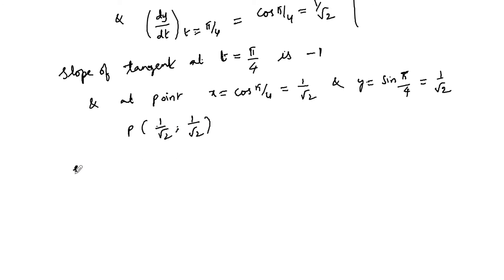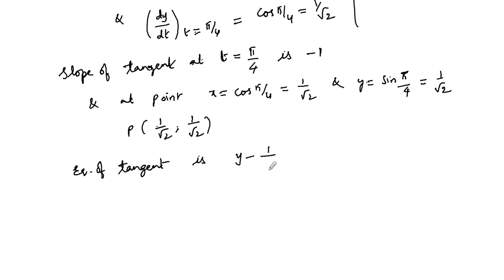Equation of the tangent is y minus y1 is equal to minus 1 times x minus 1 by root 2, using the formula y minus y1 is equal to m times of x minus x1.